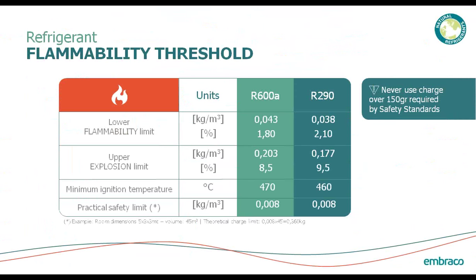When we talk about the flammability of refrigerants, we need to understand what that really means in the practical world. For R600 and R290, there is a lower flammability limit — if the concentration of the refrigerant mixed with air is too low, you cannot ignite it. When the concentration is too high, there's not enough oxygen in the mix and it will not burn. The minimum ignition temperature is around 460–470 degrees Celsius. The practical safety limit tells you how many kilograms in an occupied space are needed for it to be considered safe or not safe.